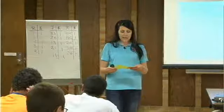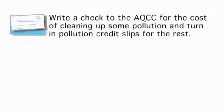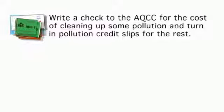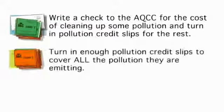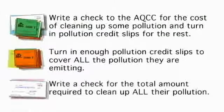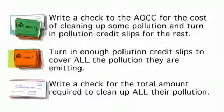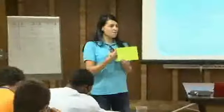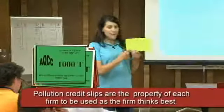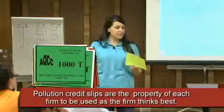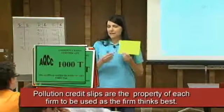Draw their attention to the accounting sheet. At the end of the simulation, their company will have to do one of three things: one, write a check to the AQCC for the cost of cleaning up some pollution and turn in pollution credit slips for the rest; or two, turn in enough pollution credit slips to cover all the pollution they're emitting; or three, write a check for the total amount required to clean up all their pollution. Make it clear that the pollution credit slips belong to them and they are free to use them, trade them, or even choose not to use them.